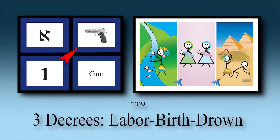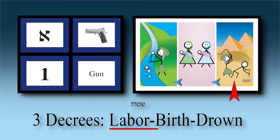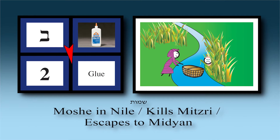Hold on for chapter twelve — that's Parashat Bo. Quick review: one gun — in Parashat Shemot: the gun fired and out came the flag. What was on the flag? L-B-D. L = Labor, B = Birth, D = Drown. Two glue: Moshe was glued into the basket, and used a glue gun to squirt glue at Datan and Aviram so they wouldn't get into a physical fight.